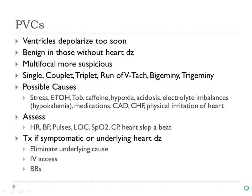A singlet is one PVC; then there's a couplet, triplet — anything more than three we call a short run of VTAC. The causes for PVCs are similar to causes for PACs. PVCs are more ominous than PACs. Beta blockers can help chronic PVCs by slowing everything down so the ventricles don't jump in too quickly. We also want to identify the underlying cause.